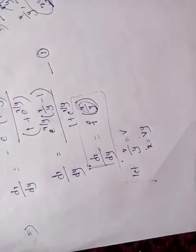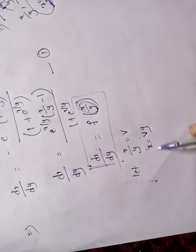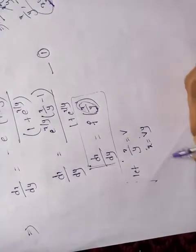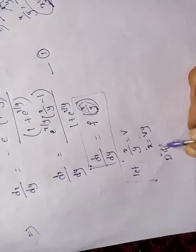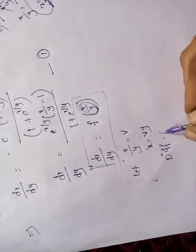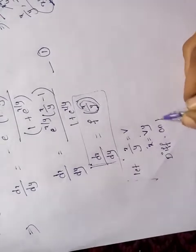We put x = vy and differentiate both sides with respect to y.